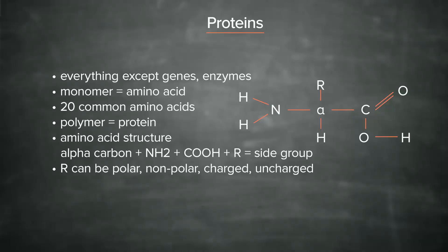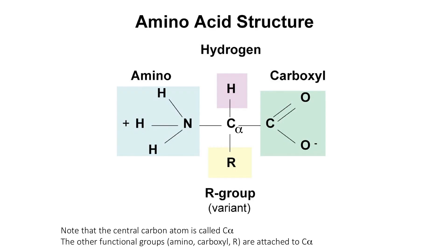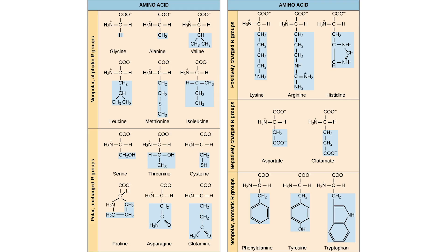We can write amino acids in three different ways: the full name, for example valine; abbreviated as VAL, three letters; or the one-letter code, V. Here's a diagram of an amino acid with the R group, and you can see that the charges on the amino and carboxyl groups can be differentially distributed. Here are the structures of the whole set of common amino acids. You don't need to know each of these, but you should be able to look at these structures and say whether this would be a charged or uncharged amino acid, or whether it would be polar or nonpolar.